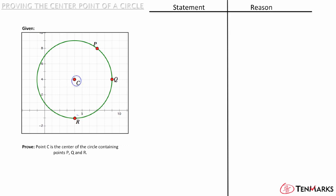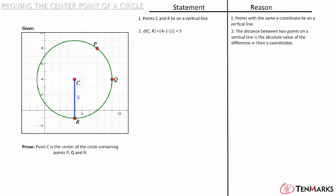Points C and R have the same x-coordinate of 4, which means they lie on the same vertical line. This means you can find their distance by taking the absolute value of the difference in their y-values. So for your first statement, write that points C and R lie on a vertical line, with the reason that points with the same x-coordinate lie on a vertical line. The absolute value of 4 minus negative 1 is 5, because the distance between two points on a vertical line is the absolute value of the difference in their y-coordinates.